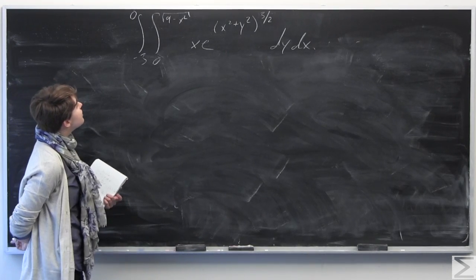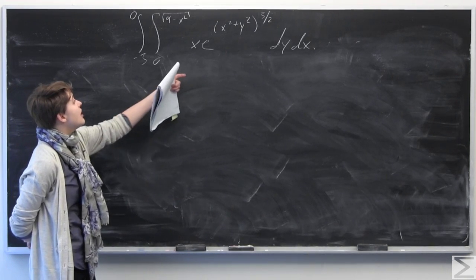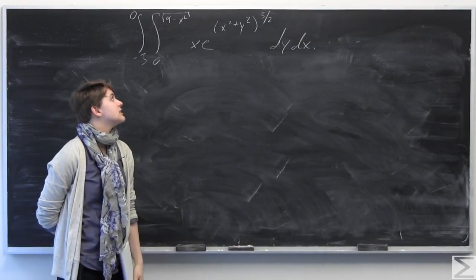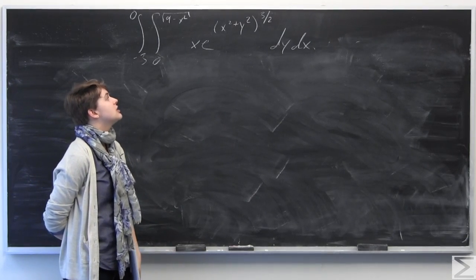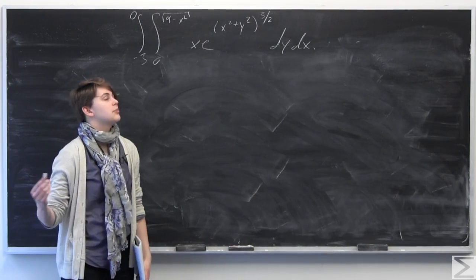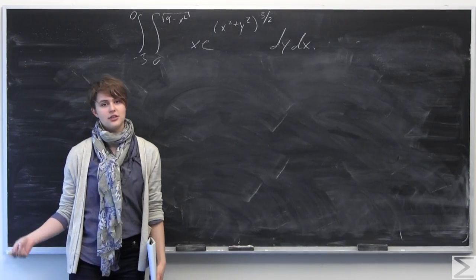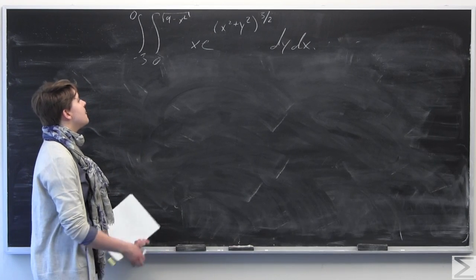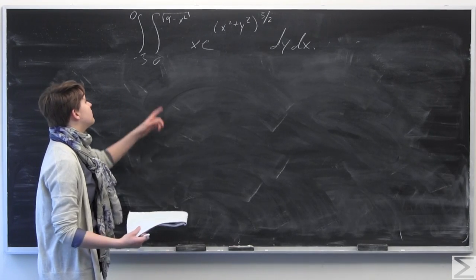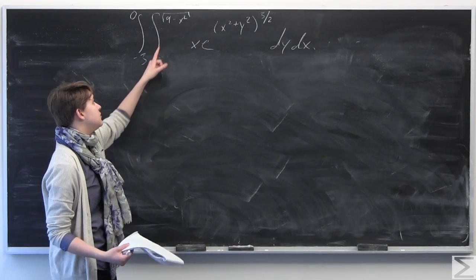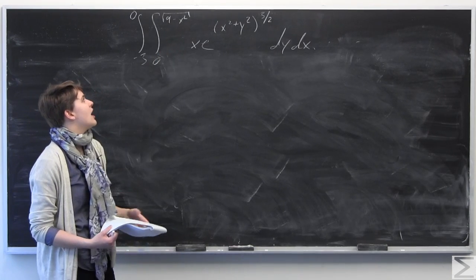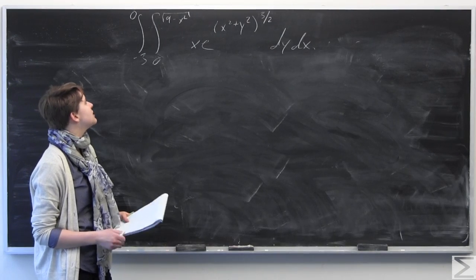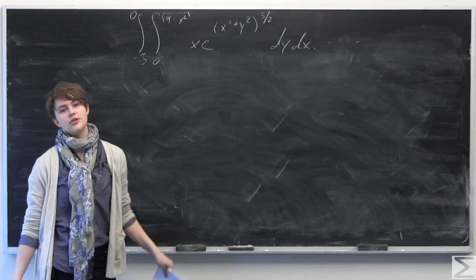We have a double integral where the integrand is x times e to the quantity (x squared plus y squared) all to the 3 halves power. Our bounds of integration are from y equals 0 to y equals the square root of 9 minus x squared, and from x equals negative 3 to 0.